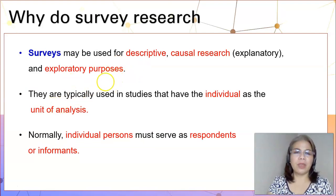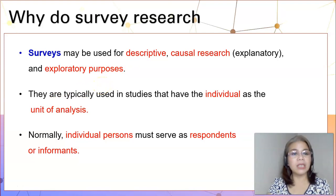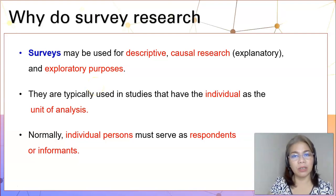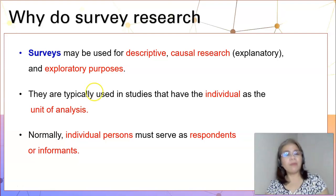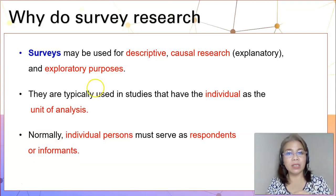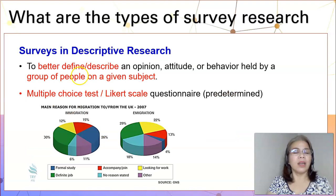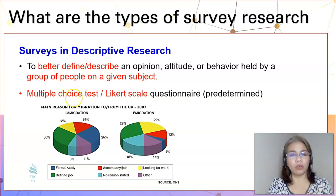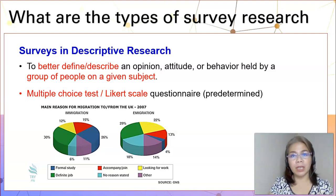Surveys could be used for descriptive, causal research, or explanatory purposes. They are typically used in studies that have individuals as a unit of analysis, meaning that normally in survey research, we go to individual persons because they are the ones who serve as our respondents or informants to give answers to our research question. One type is descriptive research, which is used if the purpose is to better define or describe an opinion, attitude, or behavior held by a group of people about a particular phenomenon.